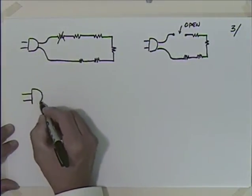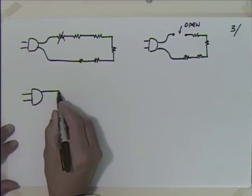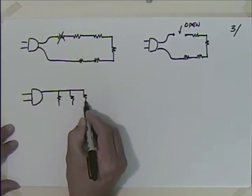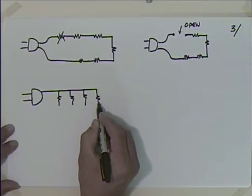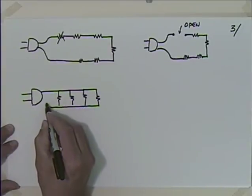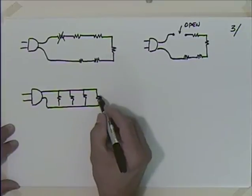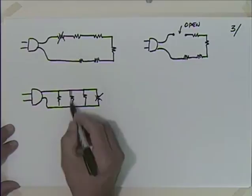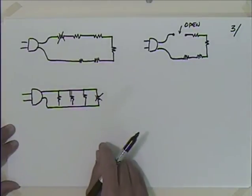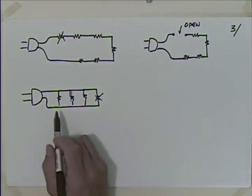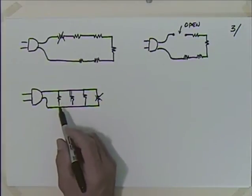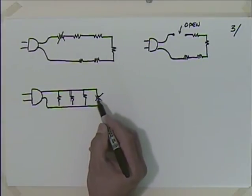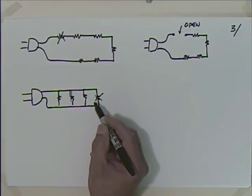A better way is to arrange the loads in parallel. Now if one burns out, you still have a path for current through the others — they'll be on. If one burns out, it will be dark; you'll see it, replace it, and you're back in business. Having them in parallel is a real advantage.